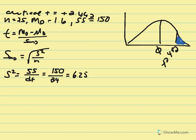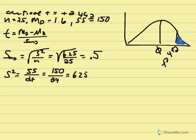Taking the square root of 6.25 divided by 25 gives us 0.5. Now our t value: mean difference of 1.6 minus 0, divided by 0.5, gives us a t value equal to 3.2.